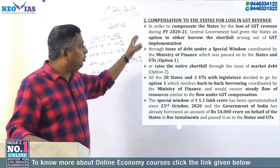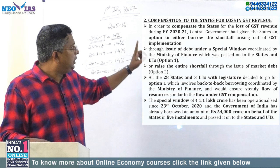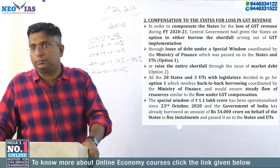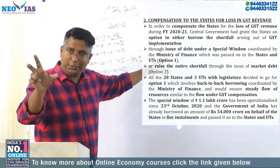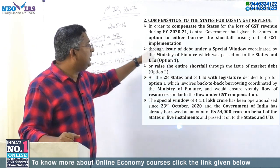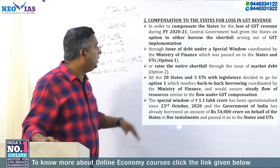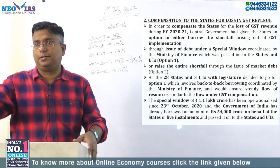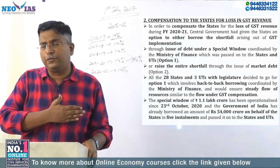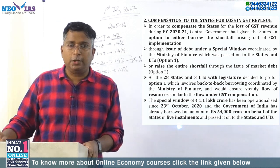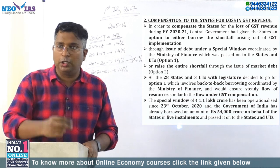Speaking directly from the Economic Survey: in order to compensate the states for the loss of GST revenue for the year 2020-21, the central government has given the states an option to either borrow. Two options were given. This topic has been in the news for nearly 6 to 9 months continuously, because to compensate states for the GST shortfall, two options were given.